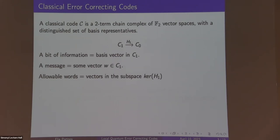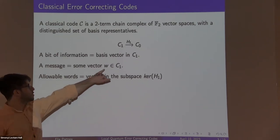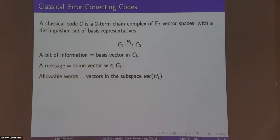Here's the mathematical setup. A classical code C is a two-term chain complex of F2 vector spaces with a distinguished set of basis representatives. We have C1, an F2 vector space, and a matrix H1 that sends C1 to C0, another vector space, with all coefficients in F2. A bit of information is a basis vector in C1 — you're thinking of linear codes — and the message is some vector w in C1. The i-th coordinate of w corresponds to some basis vector in C1, and the allowable code words are all the vectors in the kernel of H1.